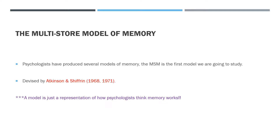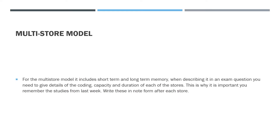What you need to remember is the studies from last week: coding, capacity, and duration — these come into the multi-store model of memory and you need to know them. It's essentially about how our brain takes in anything, how we make a memory, and what our memories are made up of. Short-term and long-term — you need to know the coding, capacity, and duration. When writing your notes on the multi-store model, just write them briefly and put a little star to refer back. In an exam question, which we will do towards the end, you're going to have to include some studies, so be wary of that, especially in an essay.